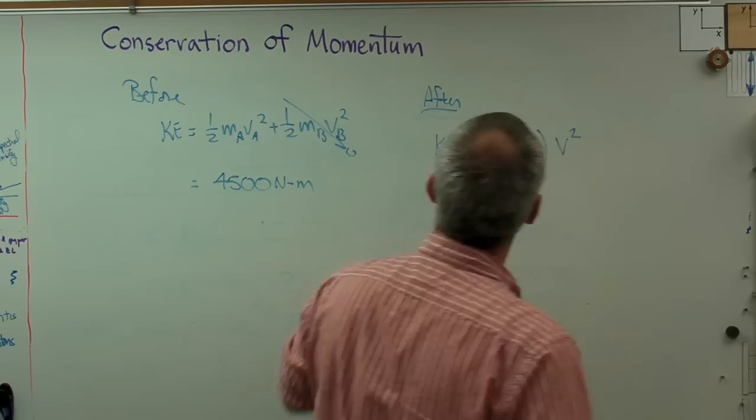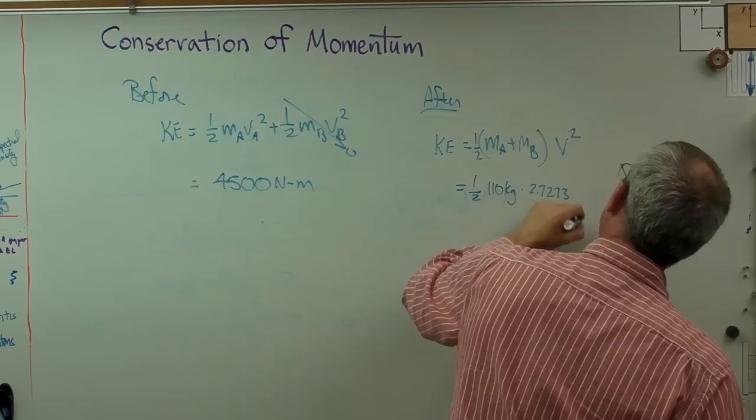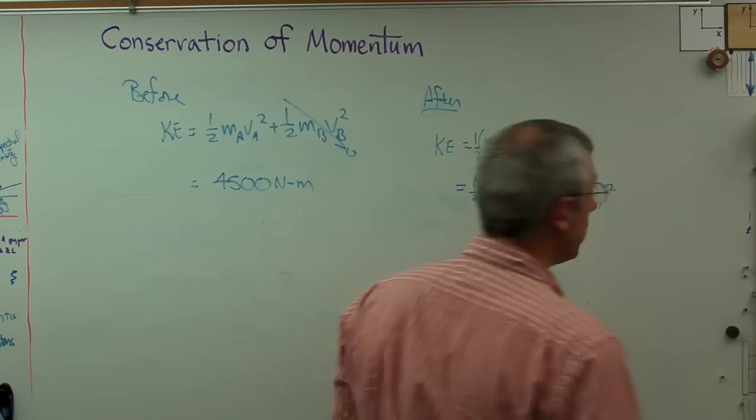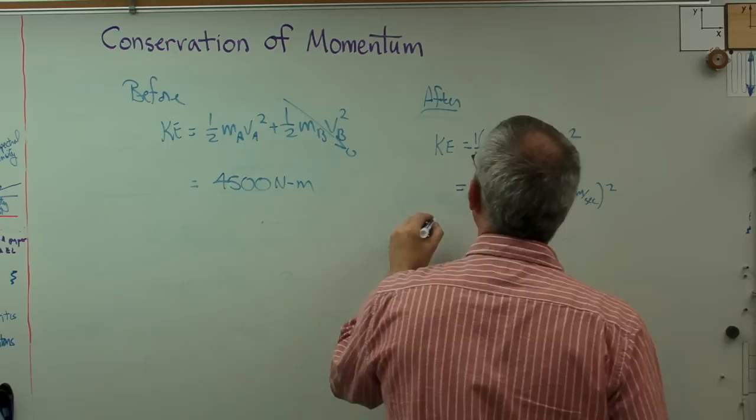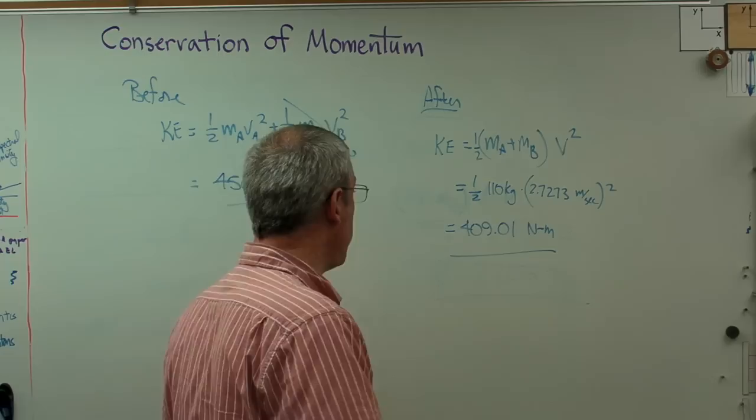After, the kinetic energy equals one half times MA plus MB times V squared. So that's one half times 110 kilograms times 2.7273 meters per second, square the whole thing. When I do that, I get 409.01 Newton meters as well.